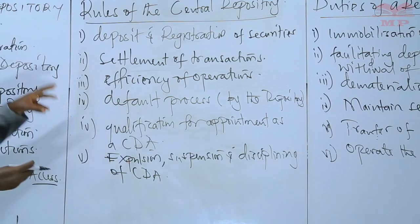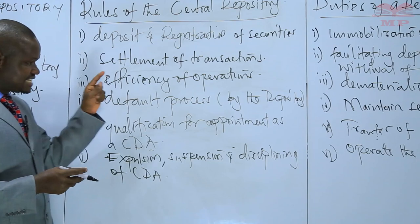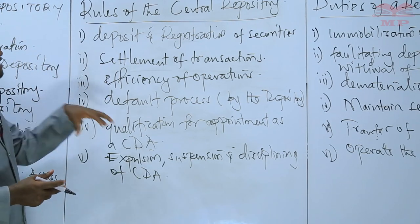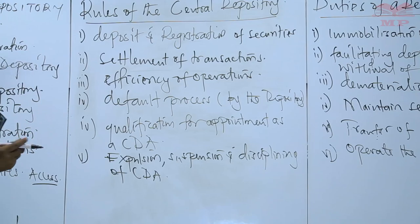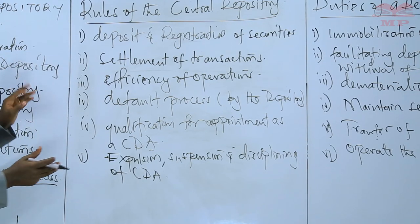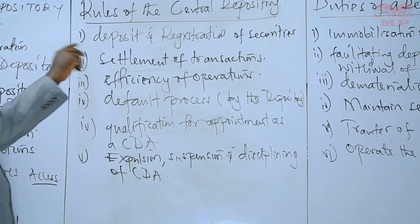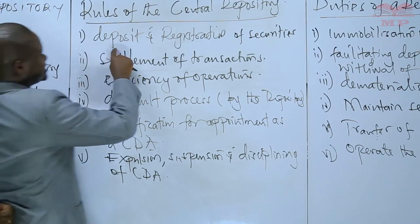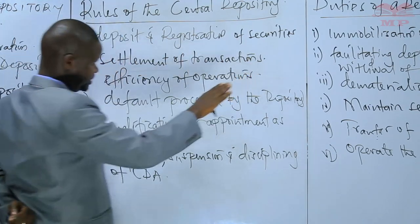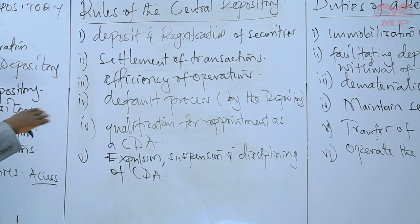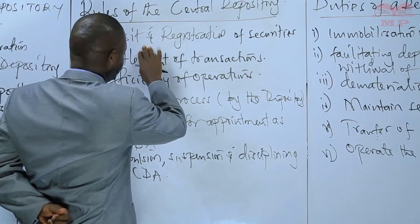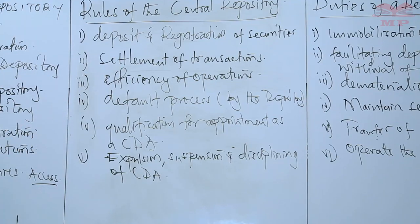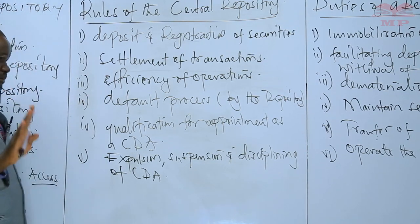If we look at this spread of regulations, there are regulations relating to the operations of the central depository and regulations in respect of how the central depository agents are going to conduct themselves. We have pointed out why — regulations are good for efficiency, they are good for transparency, and they are good for investor confidence. The regulations on deposit and registration of securities ensure that even as the depository recruits agents, they are very clear on how deposits and registration of any transfers of securities are going to be recorded.